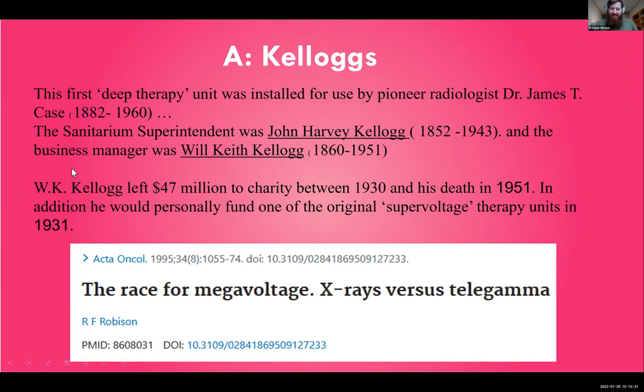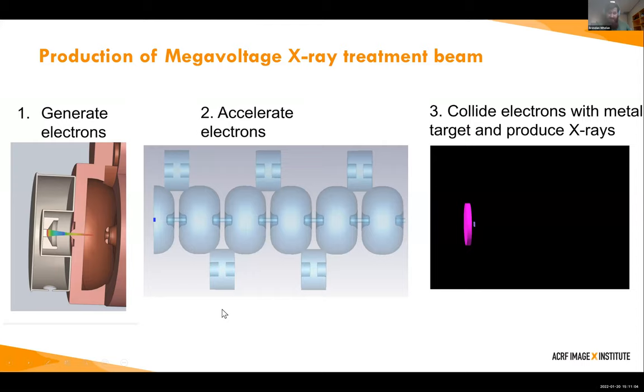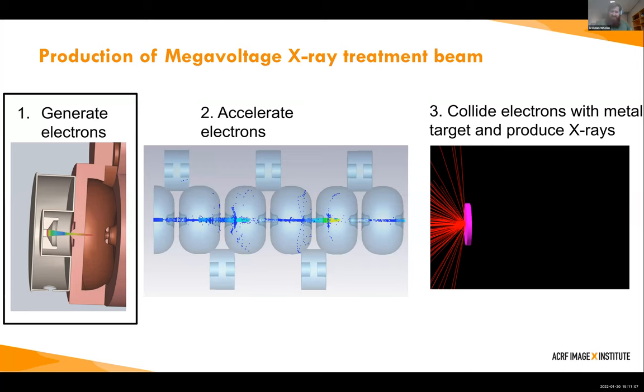The answer to the trivia question is Kellogg's. One of the first ever deep therapy units was installed in a sanatorium run by Seventh Day Adventists, and two of the people managing it were the Kellogg brothers. Will Keith Kellogg went on to found the Kellogg's we know today, and he continued to be involved in electron accelerators, personally funding one of the original super-voltage therapy units. I'd highly recommend the paper that goes through all these historical facts.